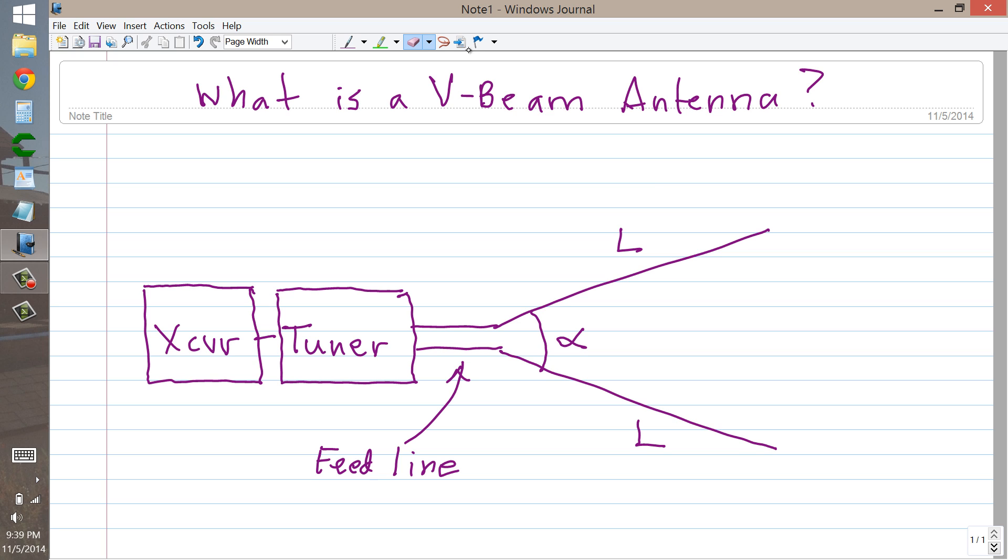Anyway, getting back to the concept of the V-beam and how to make it unidirectional, what you can do is you can terminate each end of this antenna with a non-inductive resistor. That non-inductive resistor will have to have a power dissipation rating equal up to the task of dissipating half of the transmitter output power.